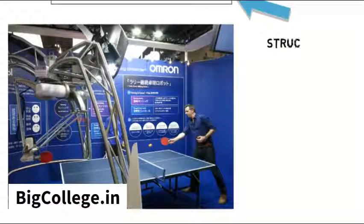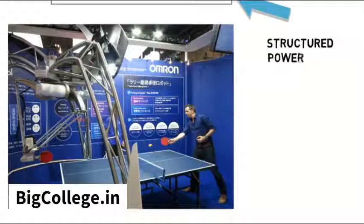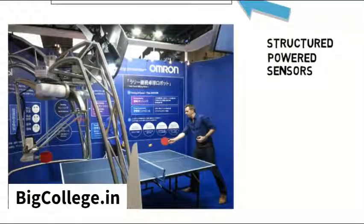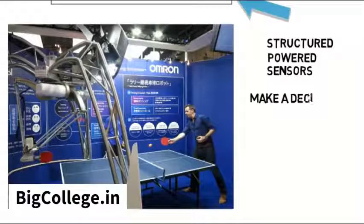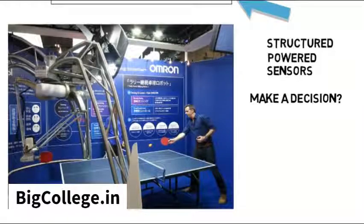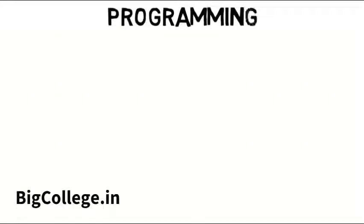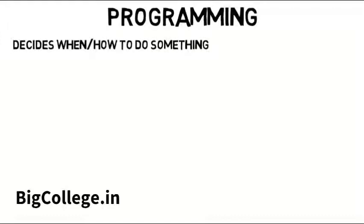So now we have this robot that is structured as we want it to be, it's powered properly, and has sensors to give the robot an idea of the environment around it. But now how will it make a decision on what to do, like if it wants to avoid an obstacle? Well that's where programming comes in. And you can think of this as the brain of the robot. The programming is how the robot decides when or how to do something based on what it gets from the sensor data.